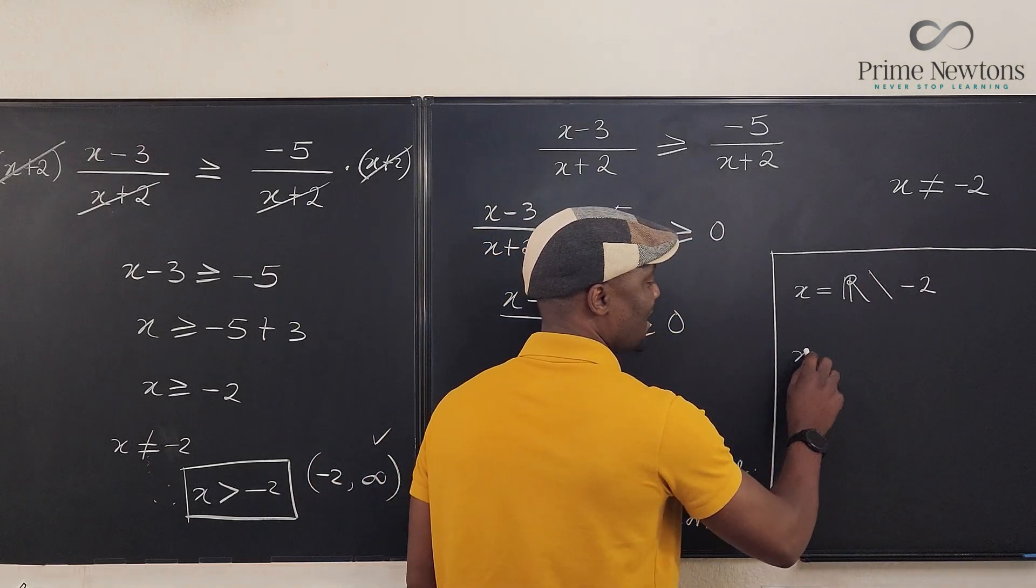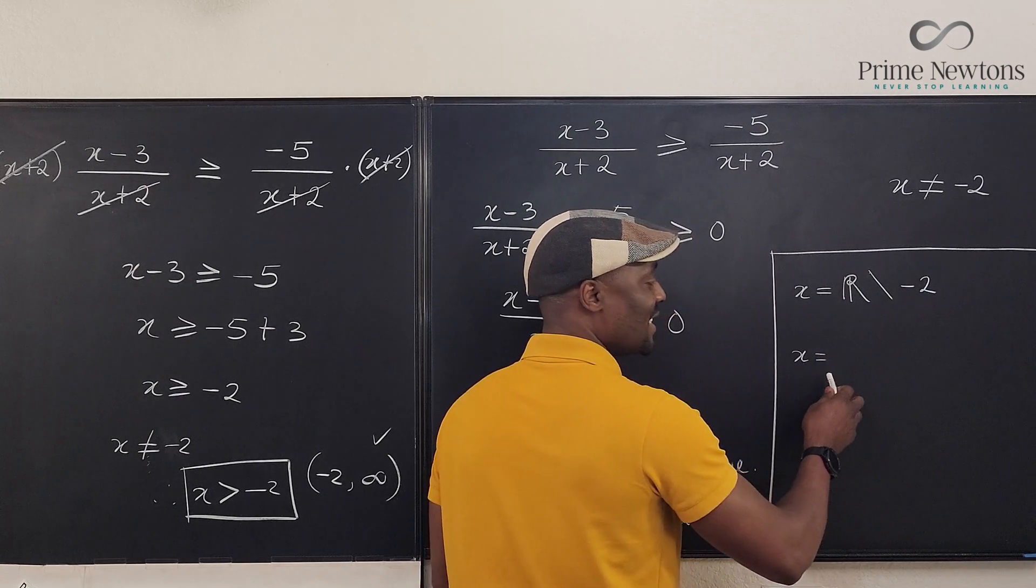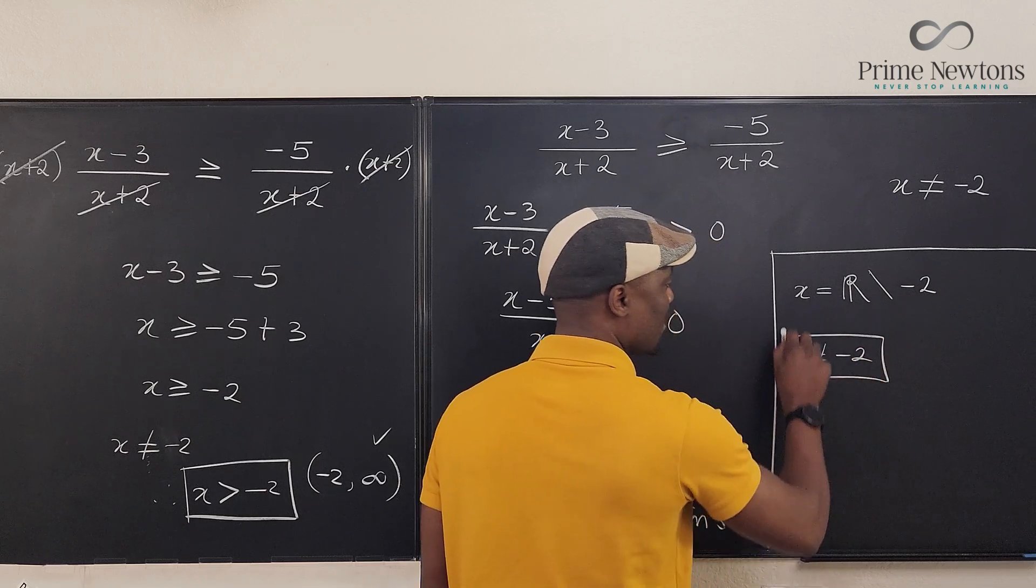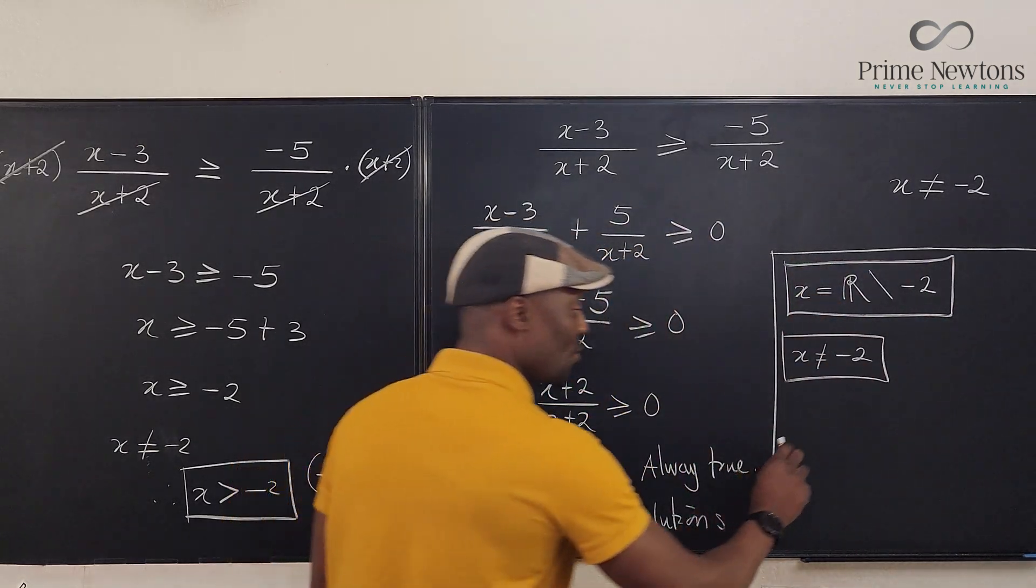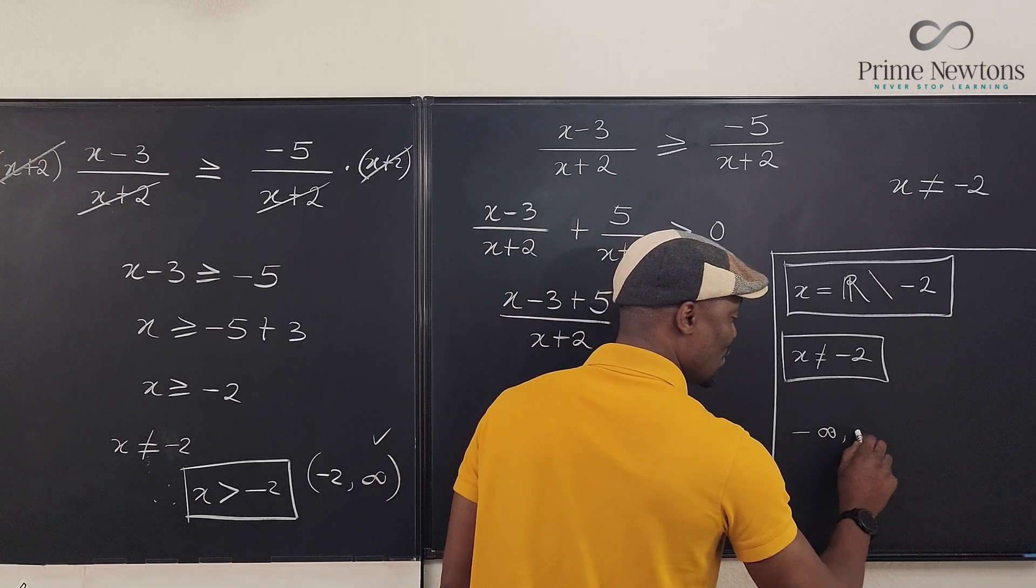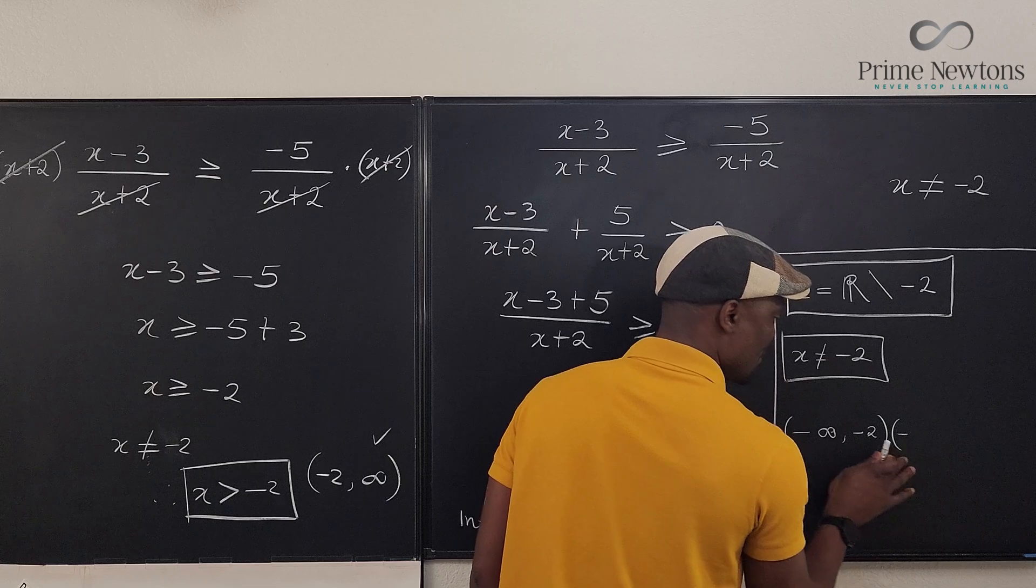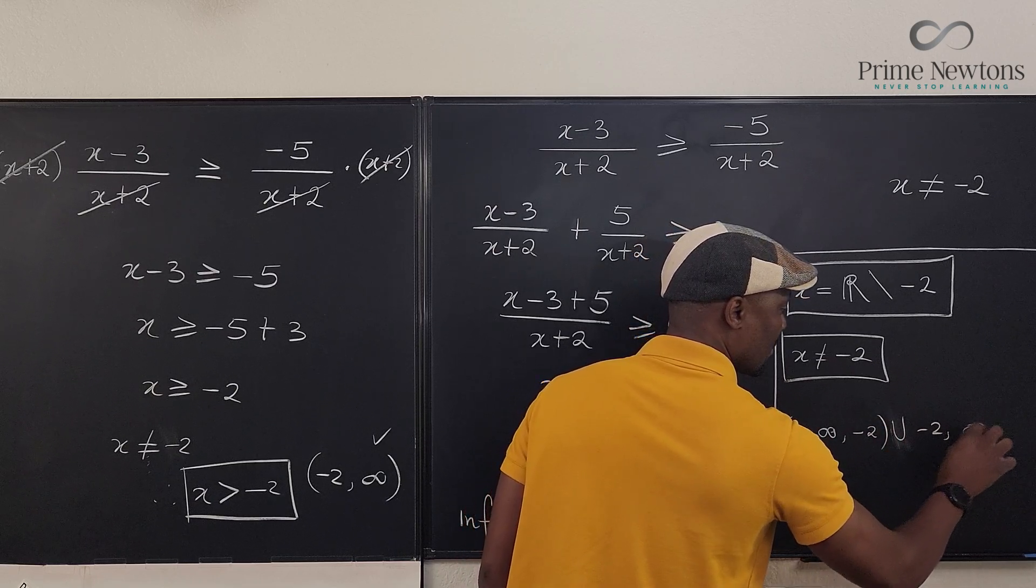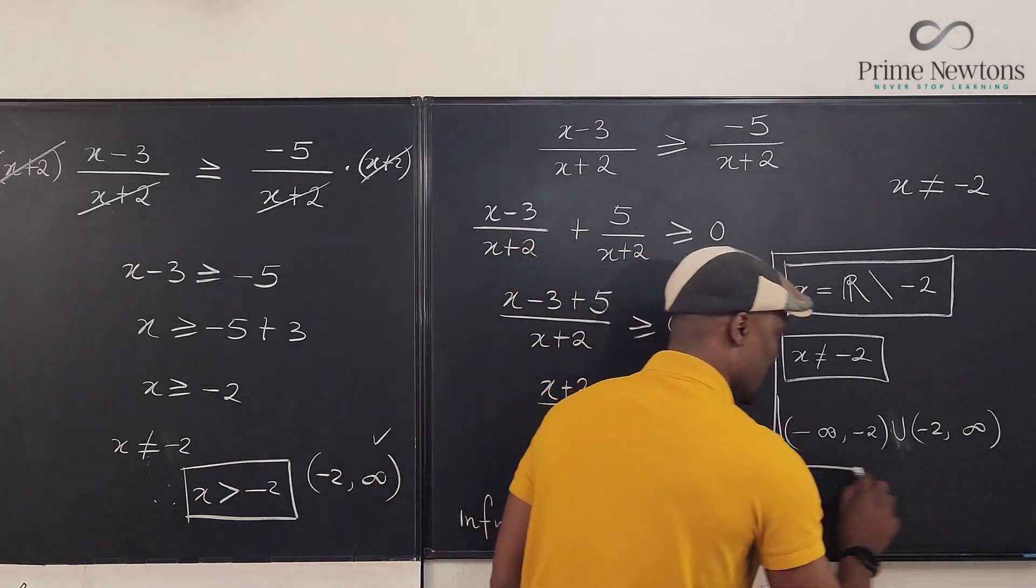Or you can say x is equal to, x is not equal to negative 2. That's another solution. So you can write it this way. You can decide to write it this way. Negative infinity, negative 2, and negative 2 to infinity union. These are the three valid answers.